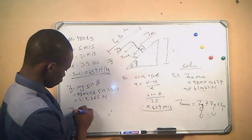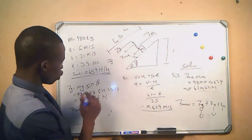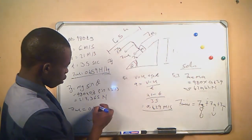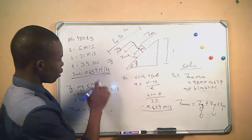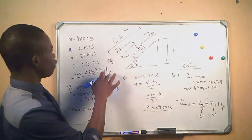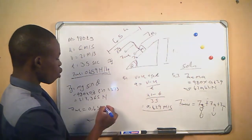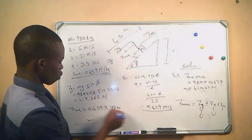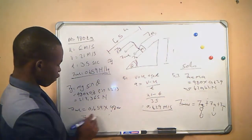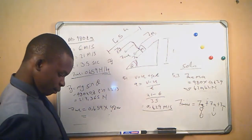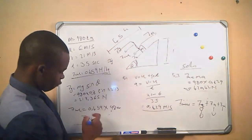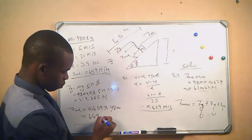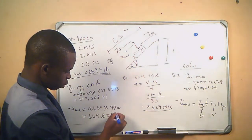The frictional force is given as 0.459 newtons per kg of the vehicle, so we multiply by the mass of 980 kg, which gives us a frictional force of 449.82 newtons.